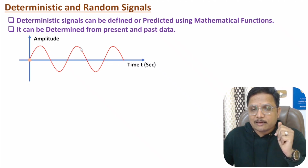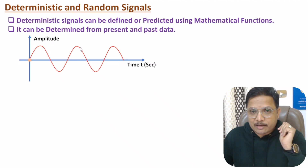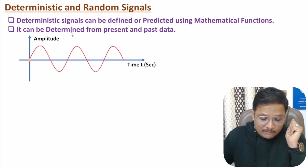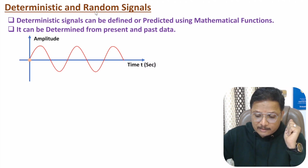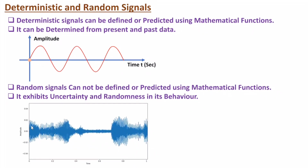When you talk about a random signal, it exhibits uncertainty and randomness in its behavior. It cannot be defined or predicted using mathematical functions. For example, a speech signal — one cannot identify or predict the mathematical function for this signal. It exhibits uncertainty and randomness in its behavior.